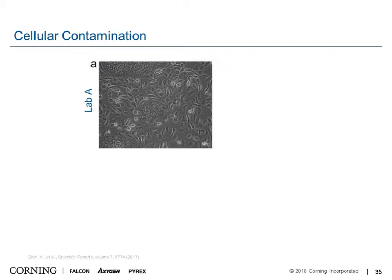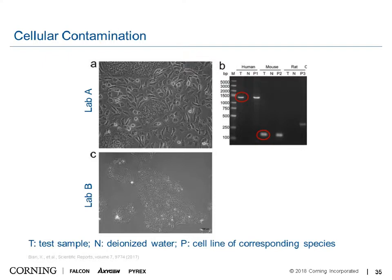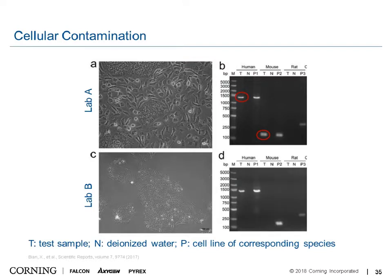The lab ran a PCR to check what's actually going on. T is the test sample — that's genomic DNA of the cells — along with a negative control and a species control. The results show those cells contain human cells but also mouse cells, meaning there is a clear cross-species contamination. Normally the cells should look more round in shape, and when you run the PCR you should see only human cells and no mouse cells.